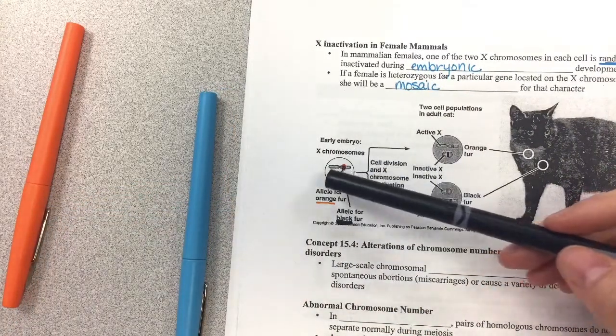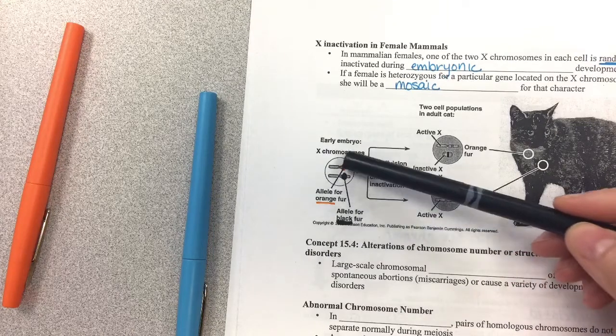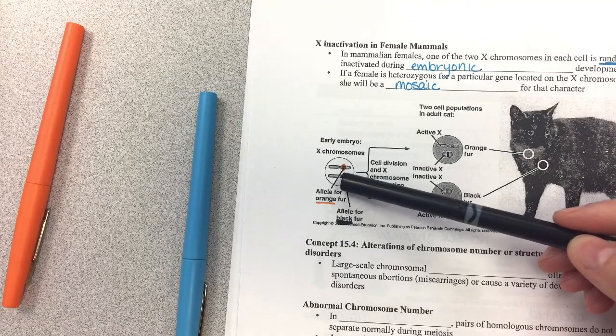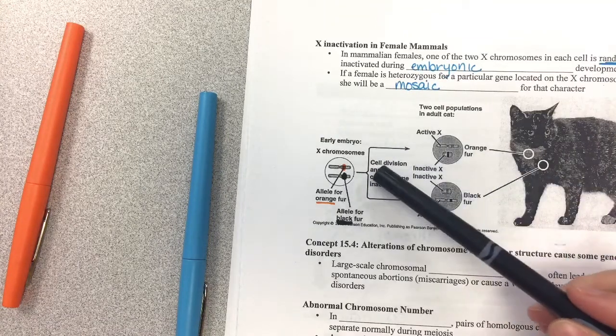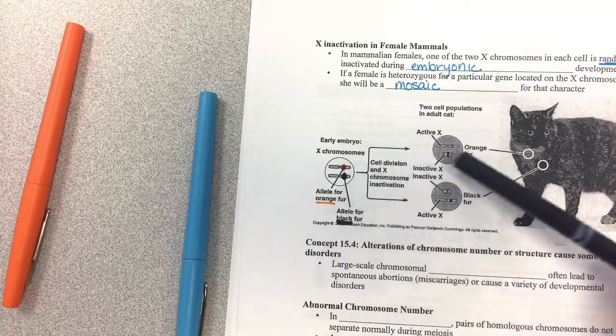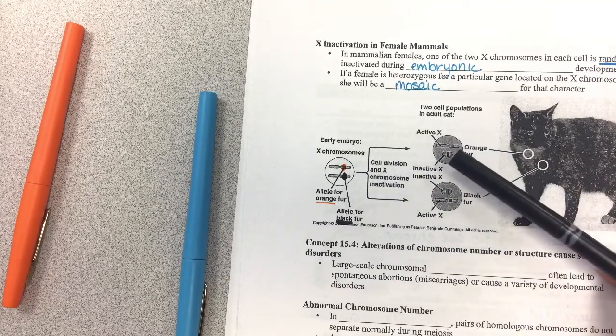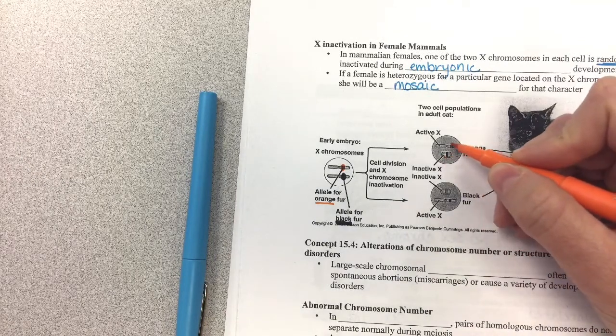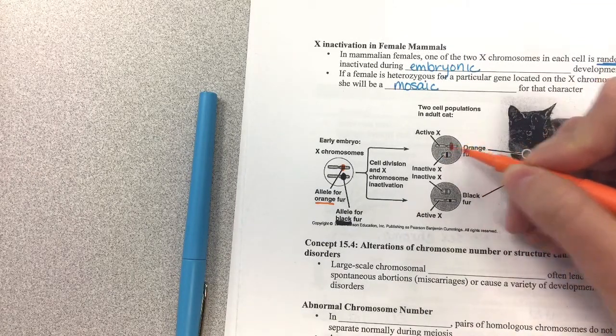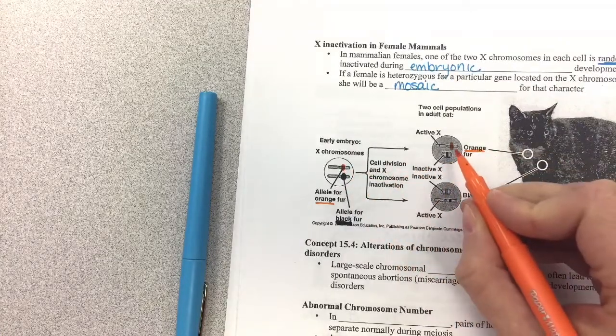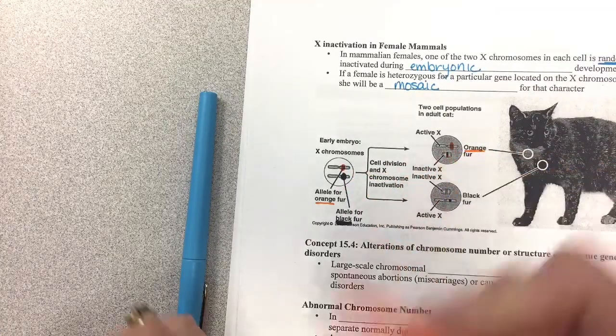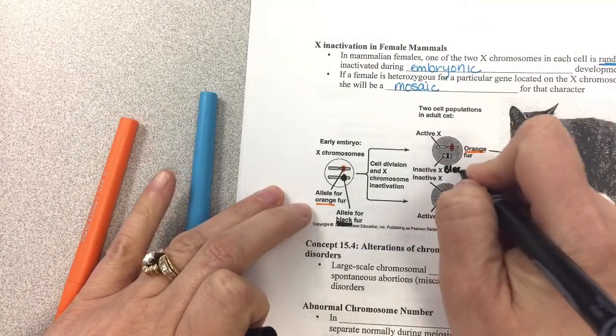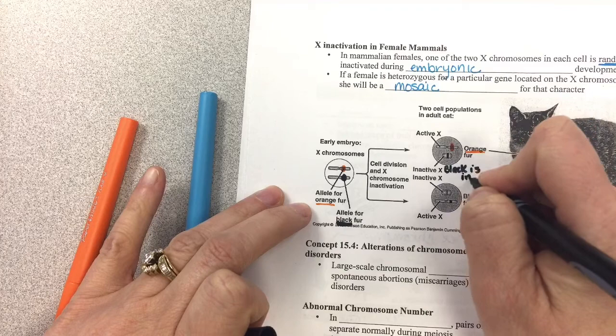And so what happens is, very early on in development, one of the two X chromosomes becomes inactivated. So look at here, it says cell division and X chromosome inactivation. So some inactivate the X chromosomes. So therefore, the active X is the one that has the orange gene on it, and the black is inactive. So here the black is inactivated.